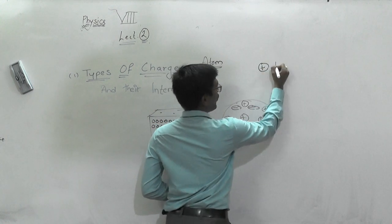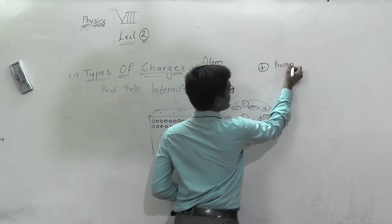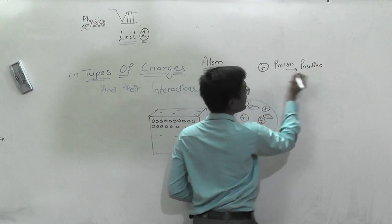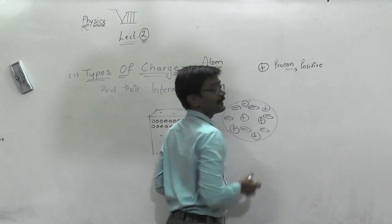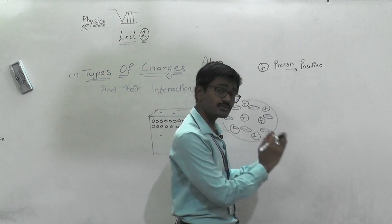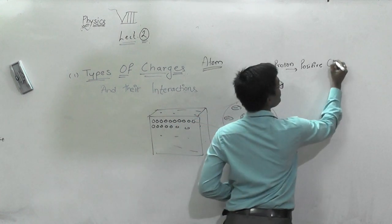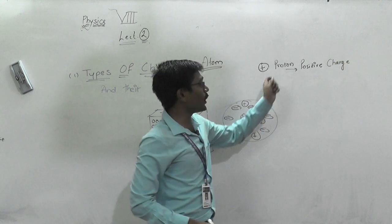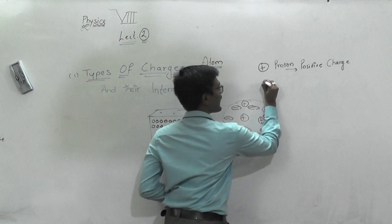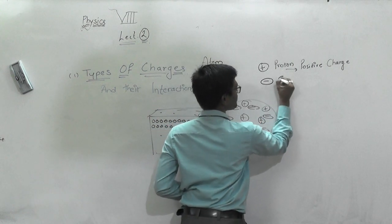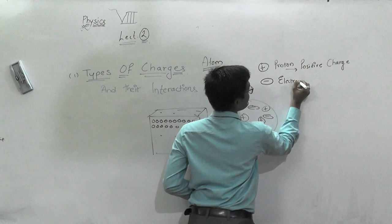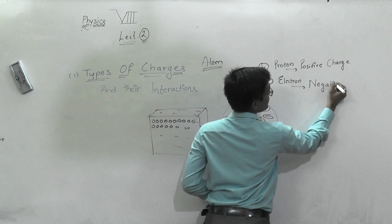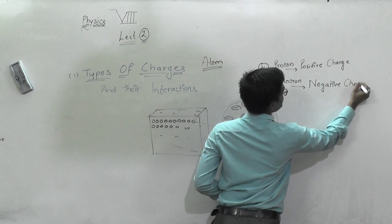A proton is a particle and it is associated with a positive charge. So whenever we have a proton, we say it has a positive charge. Similarly, if we have an electron, then we say it has a negative charge.